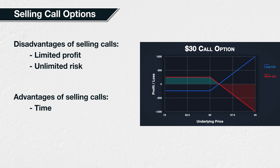When buying an option, this will normally require the buyer to pay the entire premium upfront to open the position. As the maximum the long call option can lose is the premium paid, this is the only capital the buyer needs to use. In contrast, the maximum loss for selling a call option is undefined. The call option seller can't be asked to keep infinite capital in their account, but they will be asked to keep a certain amount in their trading account to support the position. This amount is called margin.